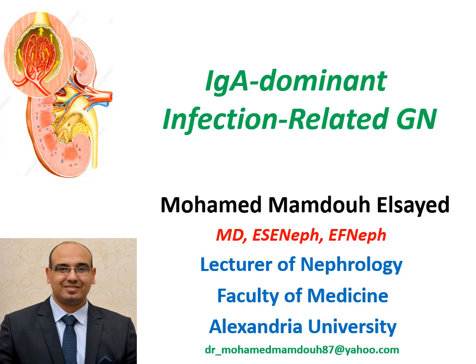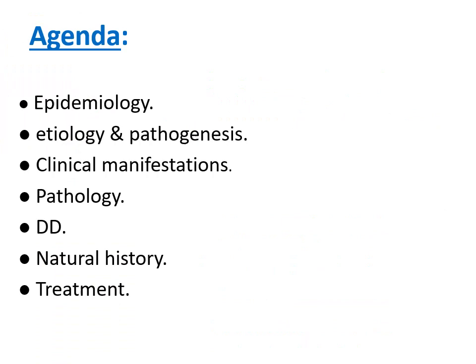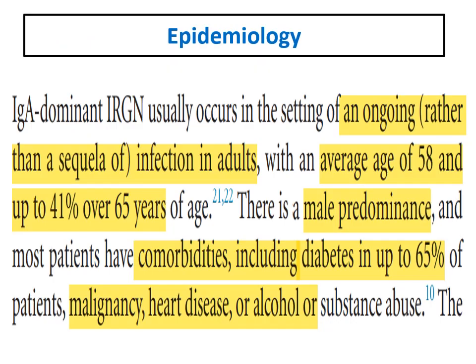Good evening, my dear friends and colleagues. Our topic today is IgA dominant infection-related glomerulonephritis, which is an important and hot topic in nephrology but unfortunately underdiagnosed, and misdiagnosed as post-streptococcal or post-infectious. It is very common nowadays. Our agenda will compare it with post-streptococcal glomerulonephritis across epidemiology, pathogenesis, and management.